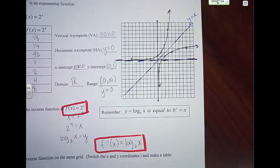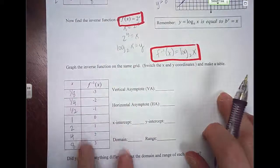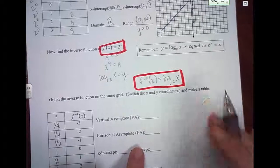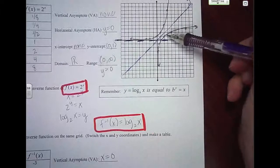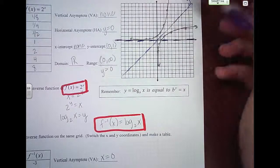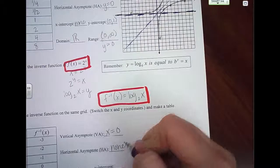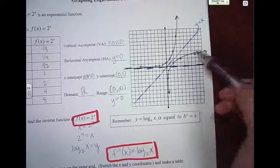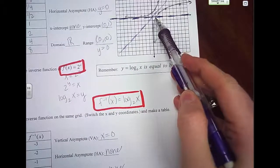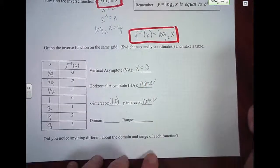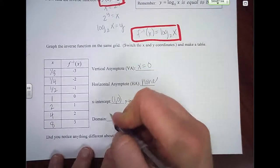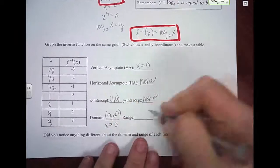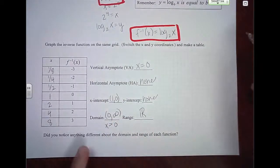Just like our x's and y's switched, the same happens with our vertical and horizontal asymptotes. Now I have a vertical asymptote at x equals 0 — you can see this is right along the y-axis. My horizontal asymptote: I have none. My x and y intercepts switch too: the new graph doesn't touch the y-axis so there's no y-intercept, but it crosses the x-axis at (1, 0). The domain here is x greater than 0, and the range is all real numbers — they switched, because they're inverses.